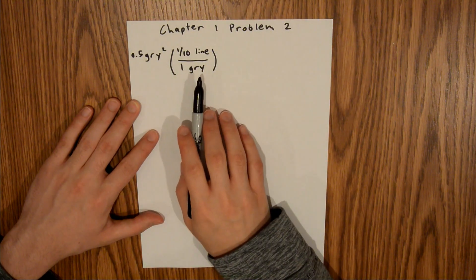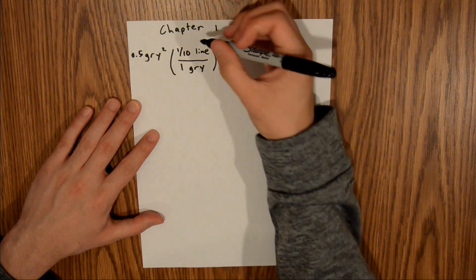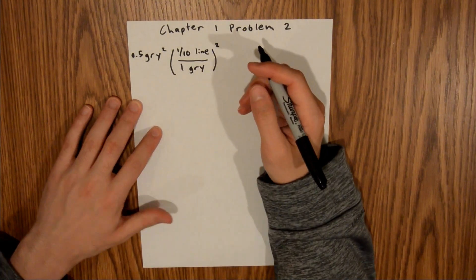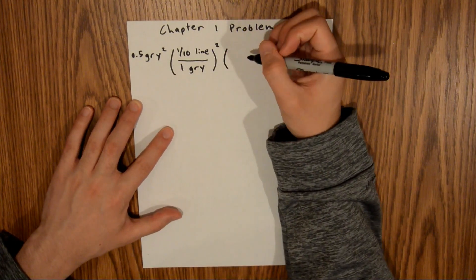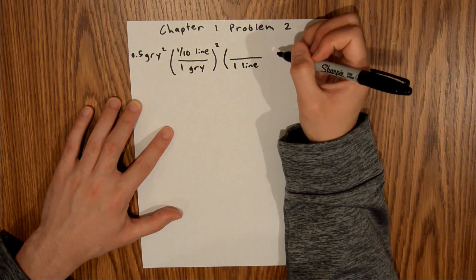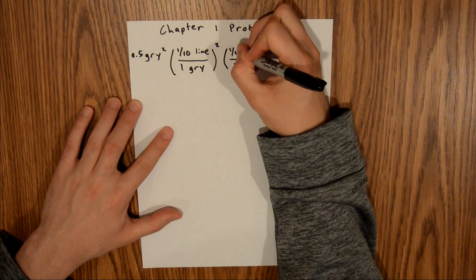In order to make these units work out, we need to square this entire term. That'll allow these GRI squareds to cancel out. Then, we know that one line is one-twelfth of an inch.